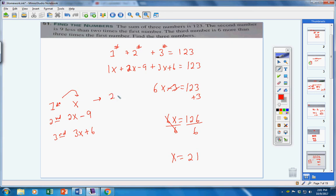x is 21, so my first number is 21. My second number is 2x minus 9. So, 2 times 21 is 42, minus 9 is 33. And then, the third number is 3x plus 6. x is 21. So, 3 times 21 is 63, plus 6 would be 69. There we go. This number is 9 less than twice as big as 21. This number is 6 more than 3 times 21. And if you add all these three numbers up, they equal 123, just like they're supposed to. So, there's your answer. That's a tough problem. Watch that again if you need to.